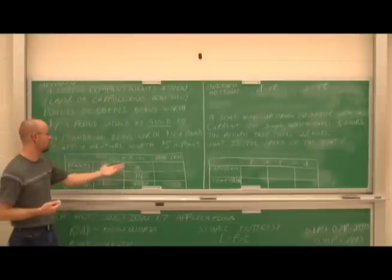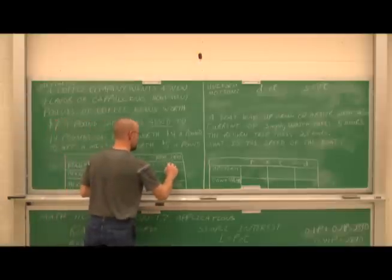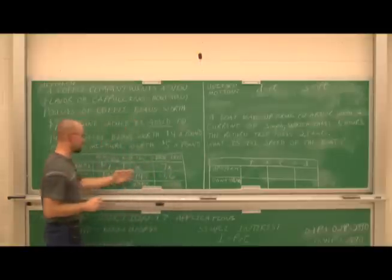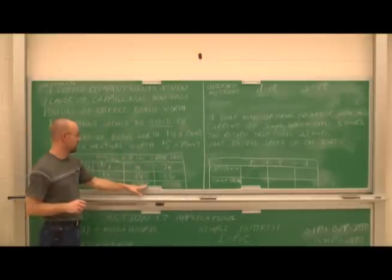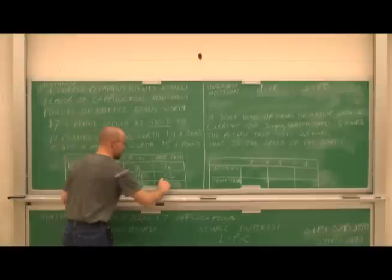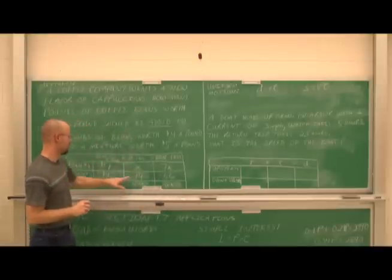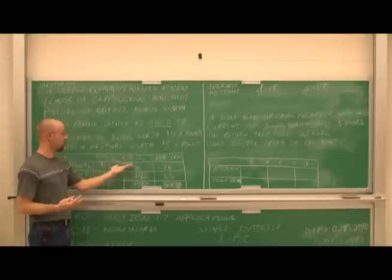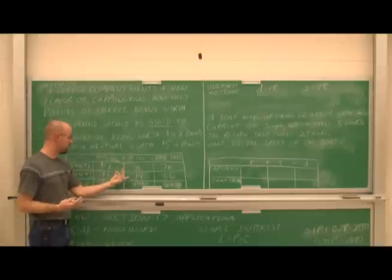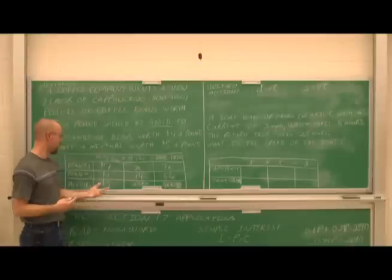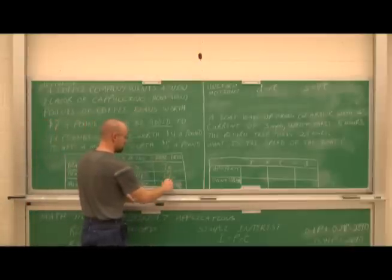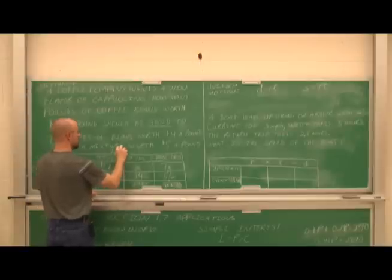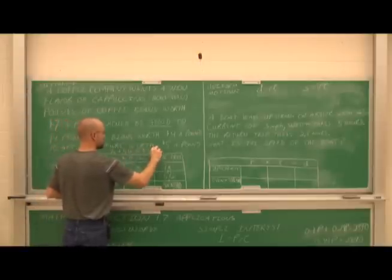To find the value of the mixture: the value of the $7 beans plus the value of the $4 beans equals the value of the mixture. So the equation is: 7x + 56 = 5x + 70.